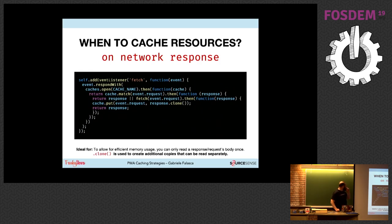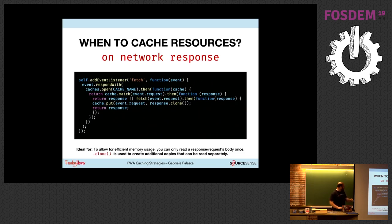Another strategy is caching on network response. This is a good approach for data that is not too large, because for a moment you have two instances of the data — you have to clone the response. If you fetch very large data it could be a memory problem because the weight is doubled momentarily.